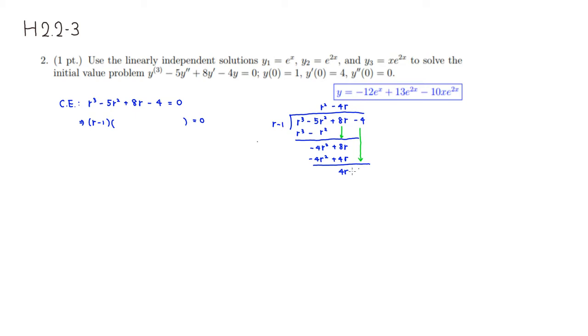We're going to have negative 4. Then how many r can we squeeze into 4r, so it's going to be positive 4. And 4 times r is 4r, 4 times negative 1 is negative 4. So you can see that the remainder is 0.